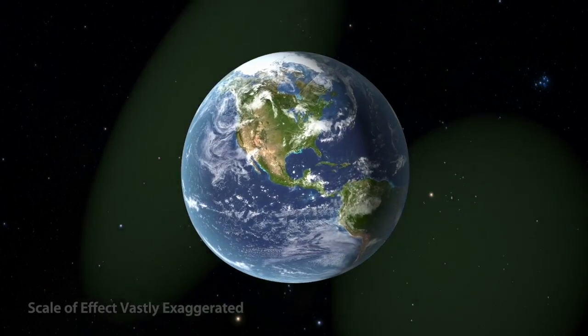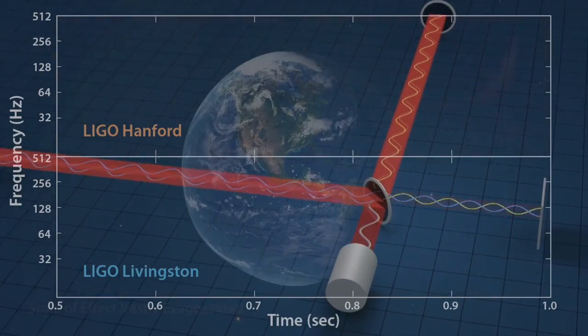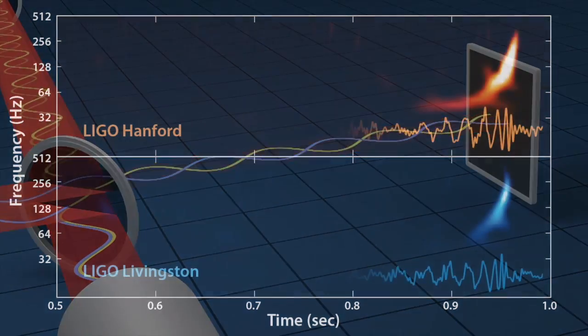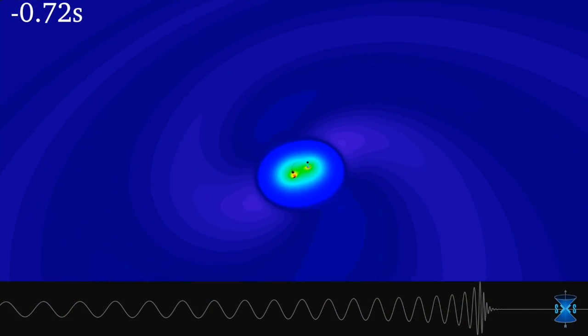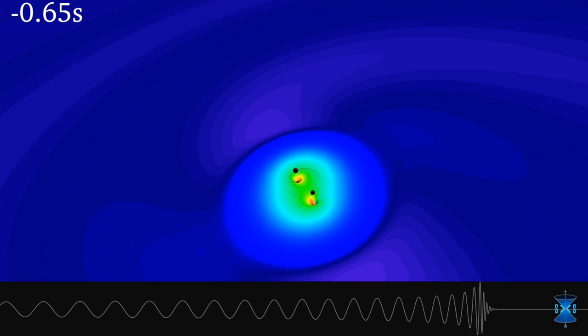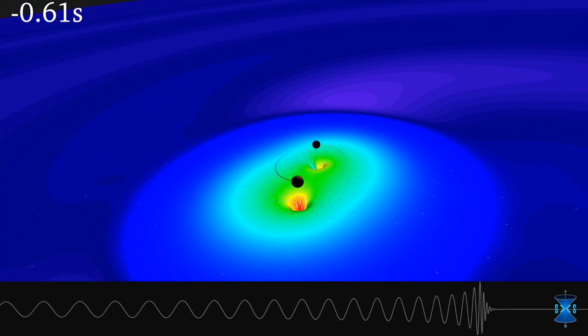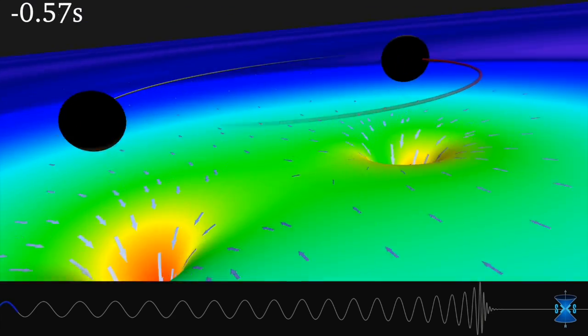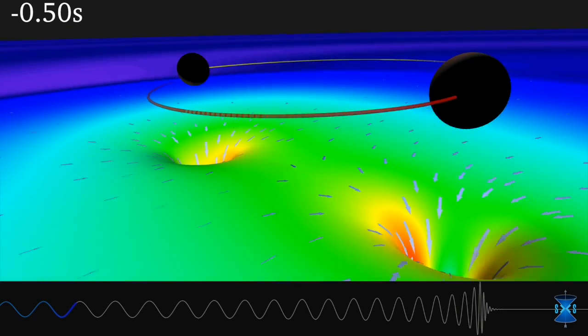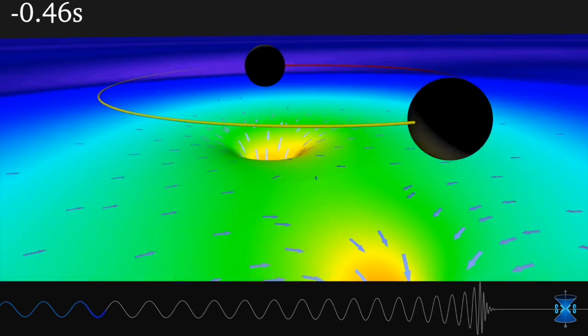Gravitational waves are generated when two extremely massive objects come together, objects like black holes. This computer simulation shows the warping of space and time around two colliding black holes. This event was actually observed by LIGO on September 14, 2015 by seeing the gravitational waves created in the encounter.